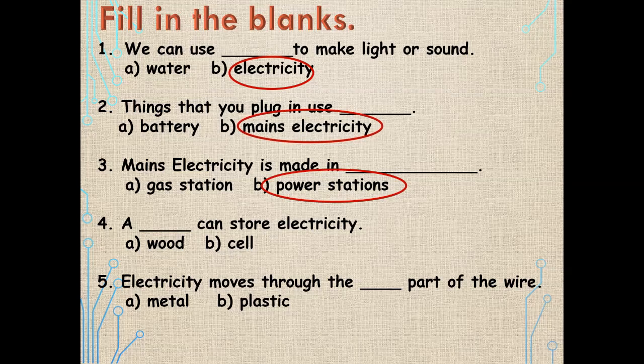Question four: a dash can store electricity — wood or cell? Good, it is a cell. Question five: electricity moves through the dash part of a wire — metal or plastic? Wonderful — it is the metal. That is why the metal wire is covered with plastic, so that we do not get hurt.